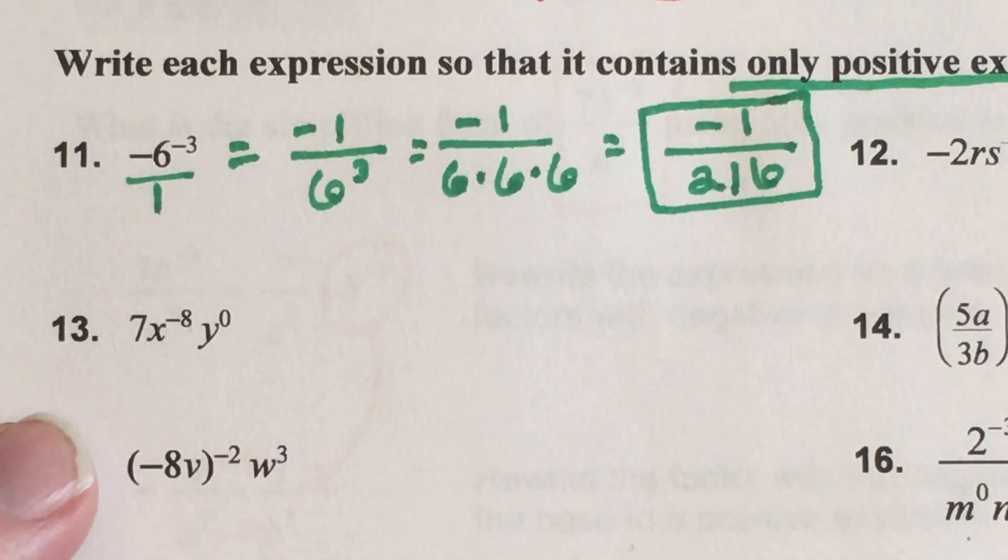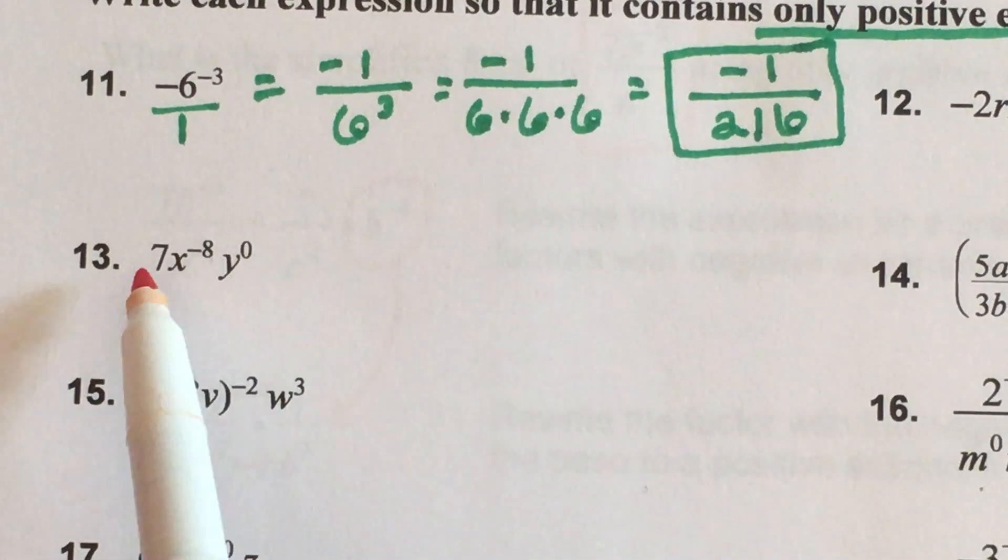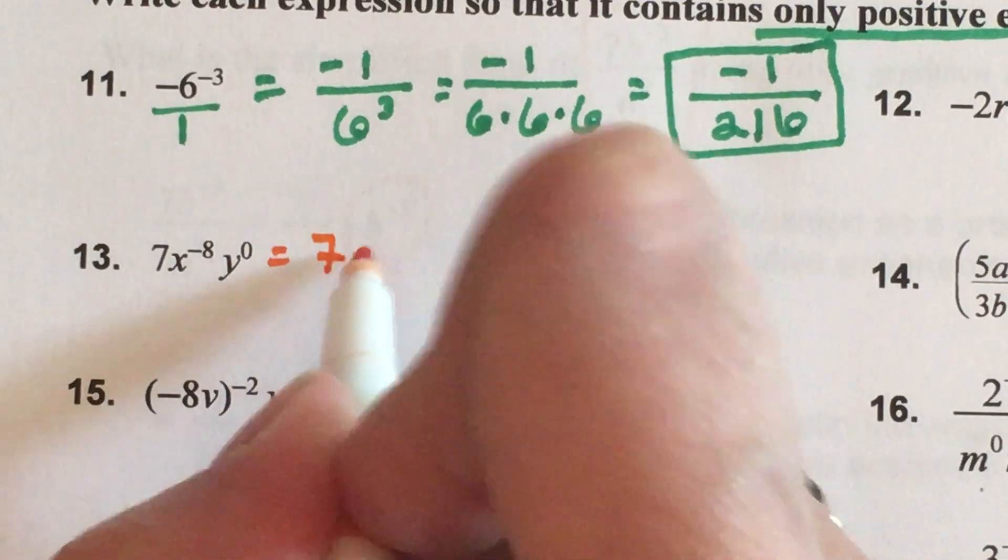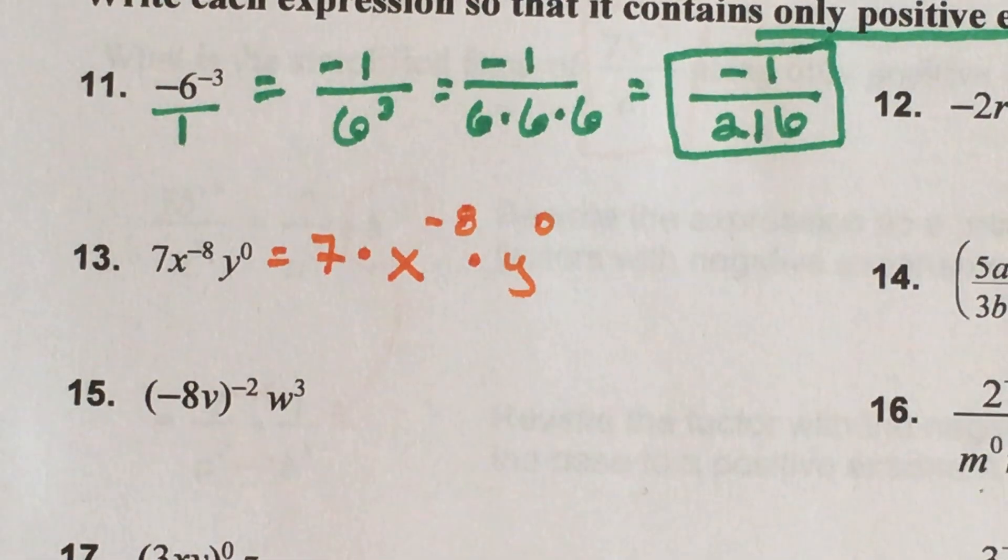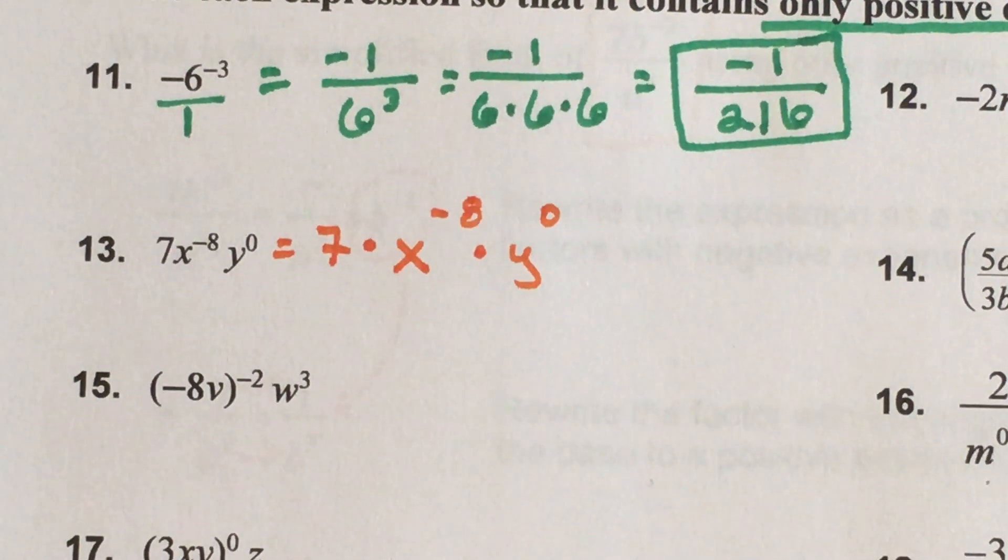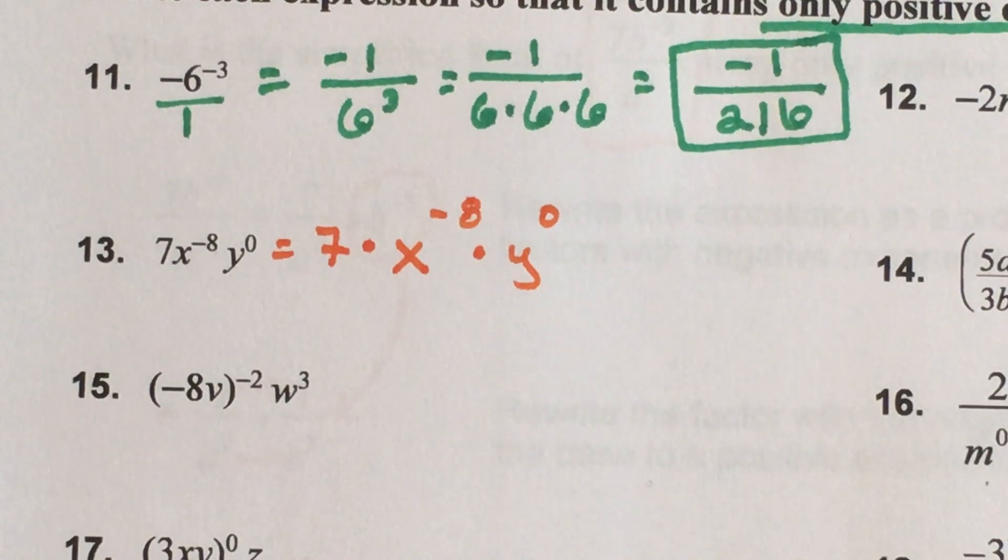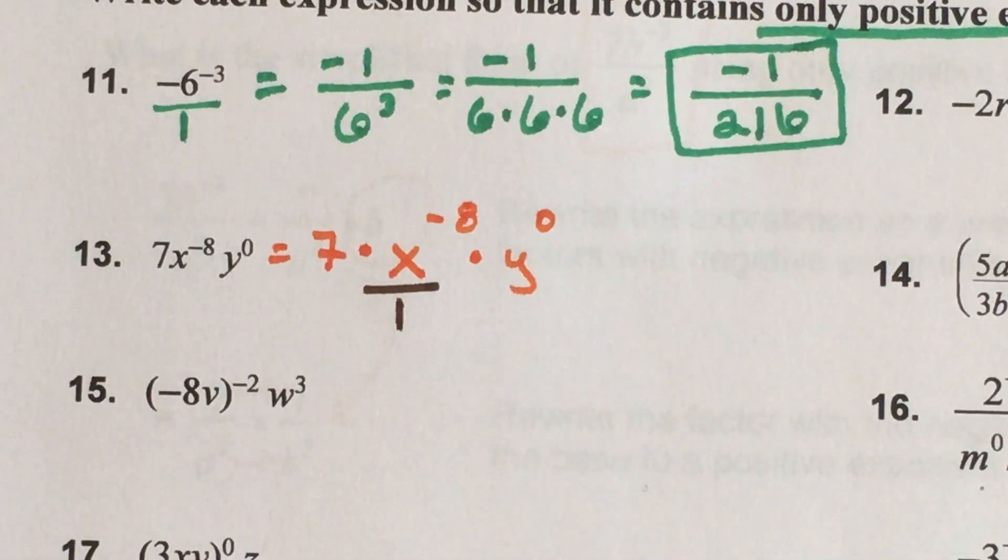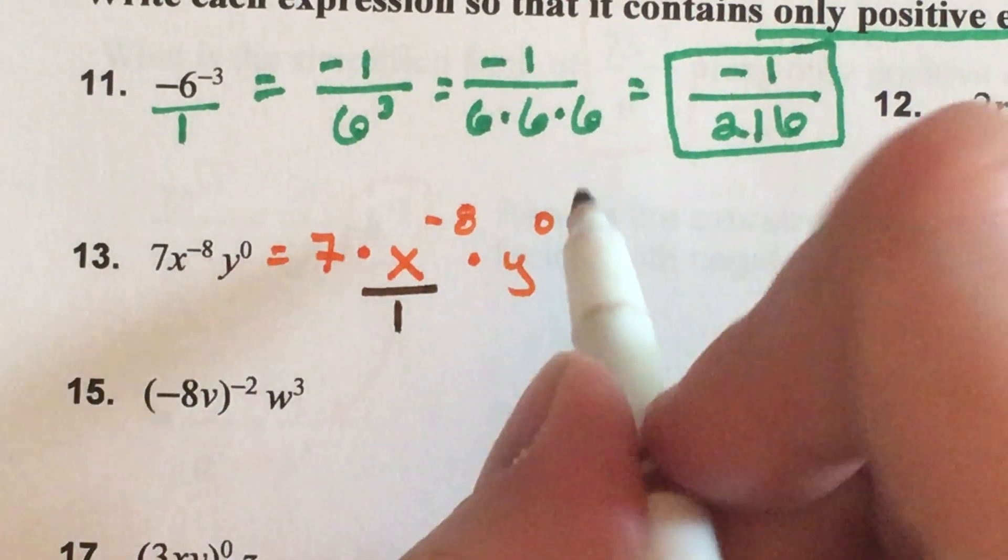Let's look at number 13. In number 13 I do not have any parentheses but I do have several pieces in this one expression. I have seven times x to the negative eight times y to the zero. Do you know which piece is going to be flipped upside down so that we use its reciprocal? The seven, the x, or the y? Good, it's the x because it has a negative exponent on it. Do you know which piece is going to turn into a one? Good, it's the y.